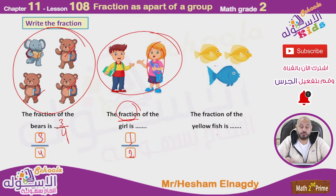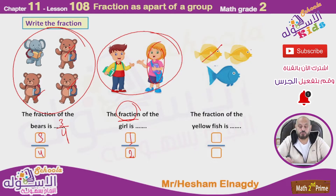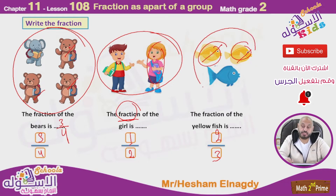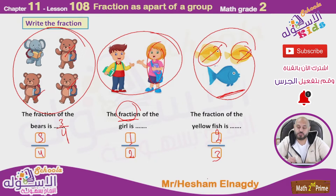The fraction of the yellow fish — one, two yellow fish from the total number of fish, which is three. So two over three, two-thirds.